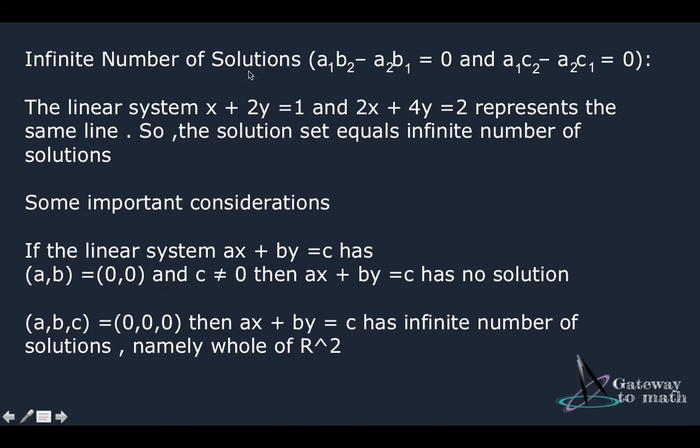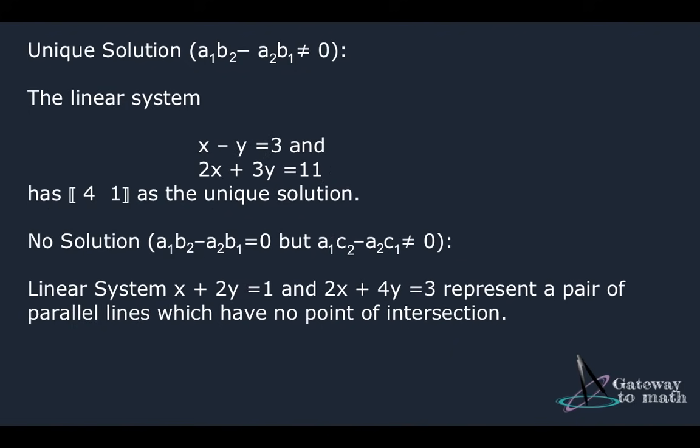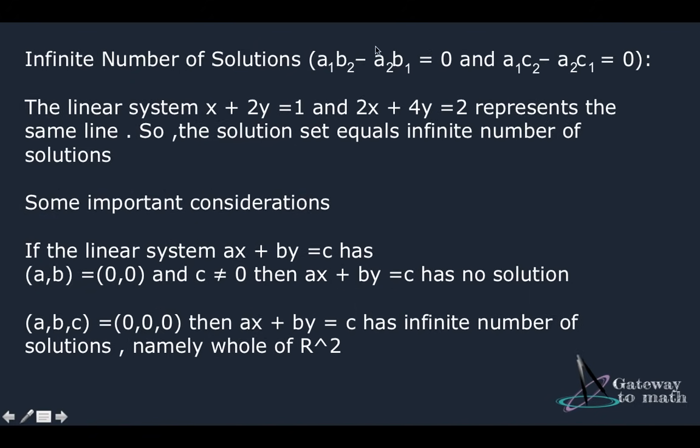The third case is infinite number of solutions and that happens when a1, b2 minus a2, b1 equals 0 and a1, c2 minus a2, c1 also equals to 0. How do you remember so many conditions? It's very simple. So for unique solution, a1, b2 minus a2, b1 should not be equal to 0. For no solution, the first validation needs to be equal to 0 but the second one shouldn't. And for infinitely many solutions, both of them should be equal to 0.